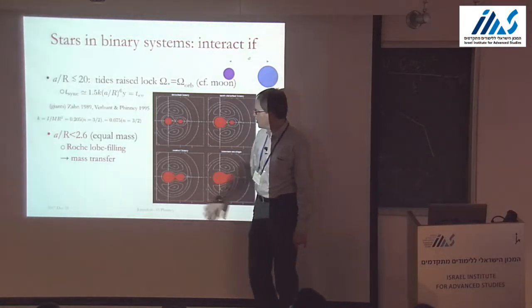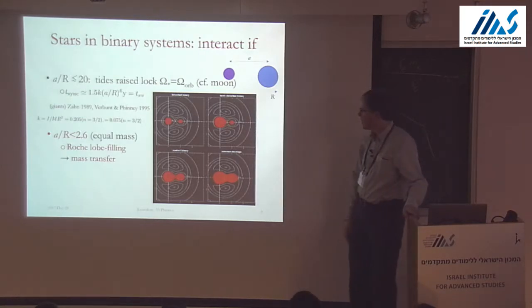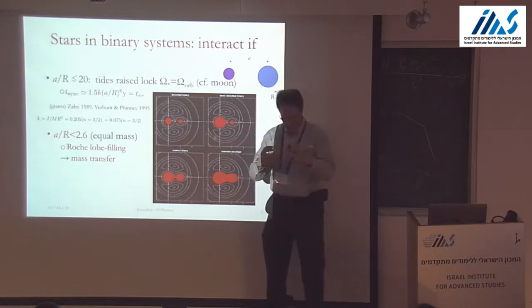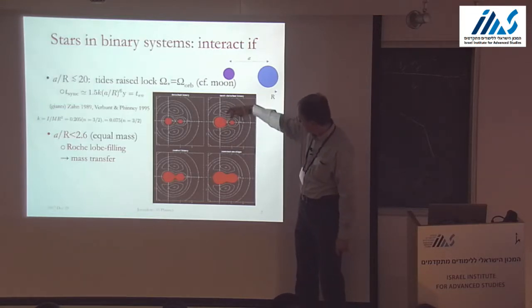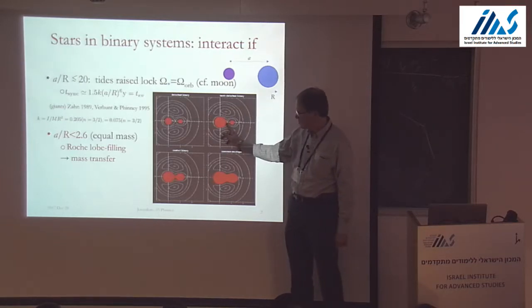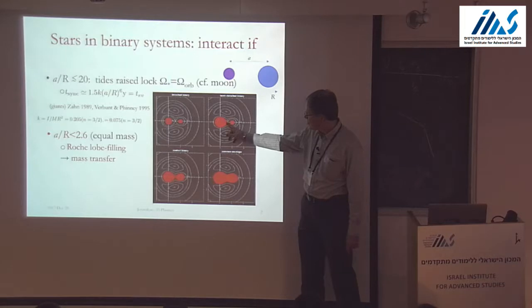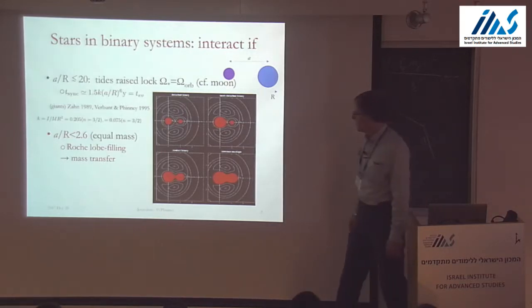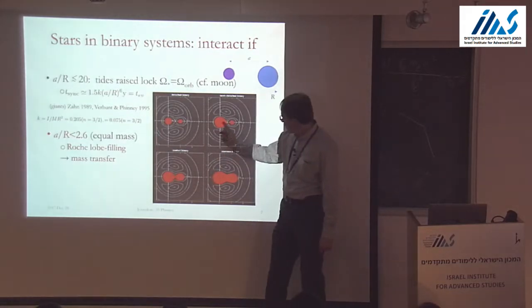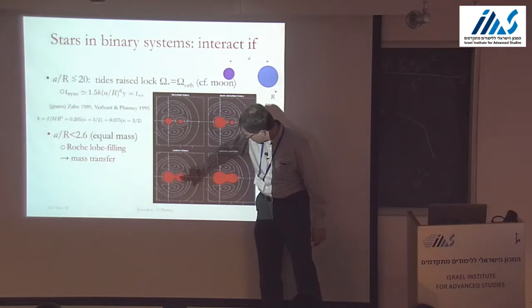Tidal synchronization is very common. Then if the separation decreases below a critical ratio — for equal masses about 2.5 — the larger star will begin to fill its Roche lobe, so its surface reaches the L1 point where the gravitational force changes sign from pointing toward one star to pointing toward the other, in the co-rotating frame including centrifugal distortions. At the L1 point the surface material feels zero effective gravity, being pulled equally toward both stars. If the star continues to swell, material begins to fall into the companion's Roche lobe.